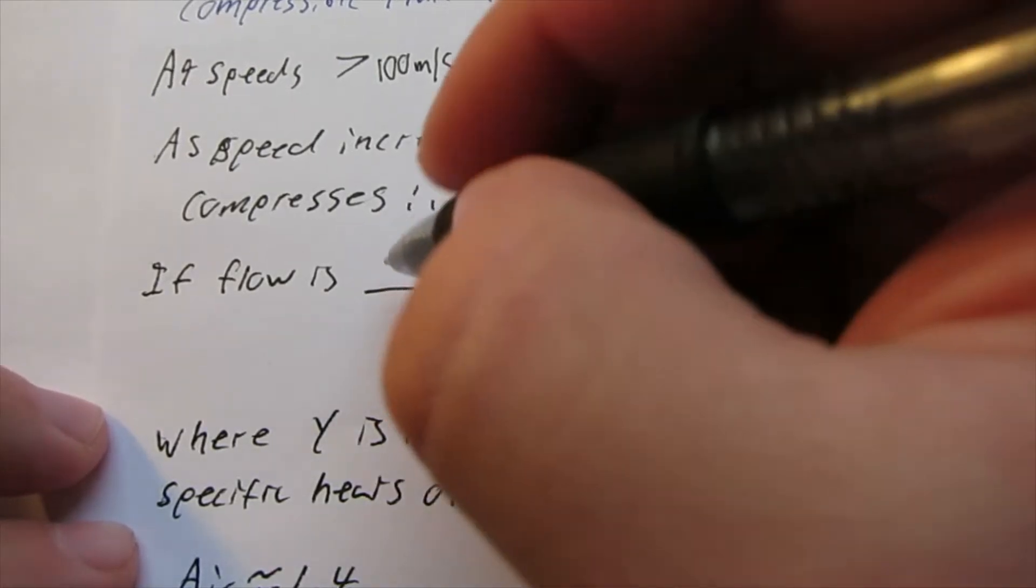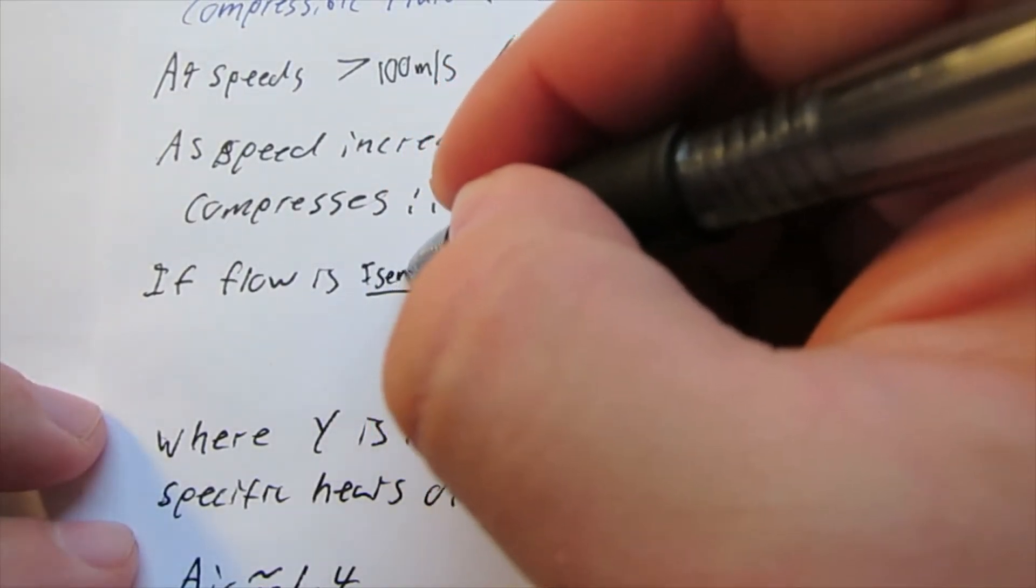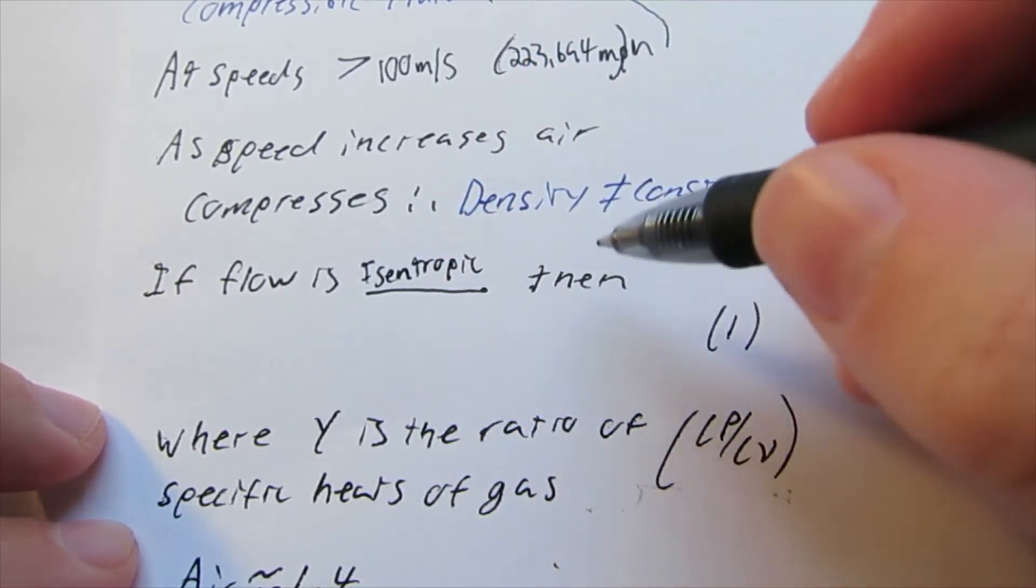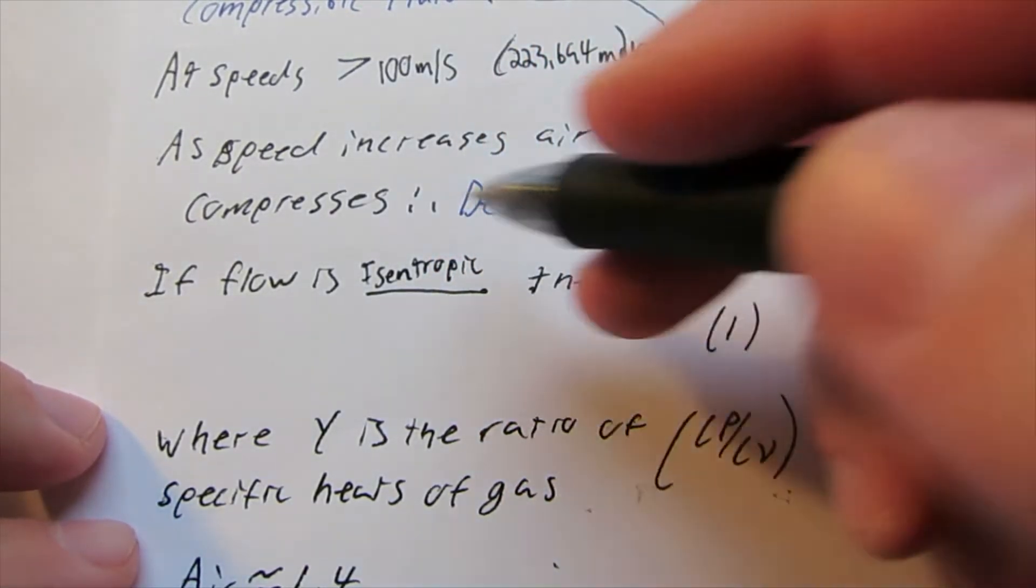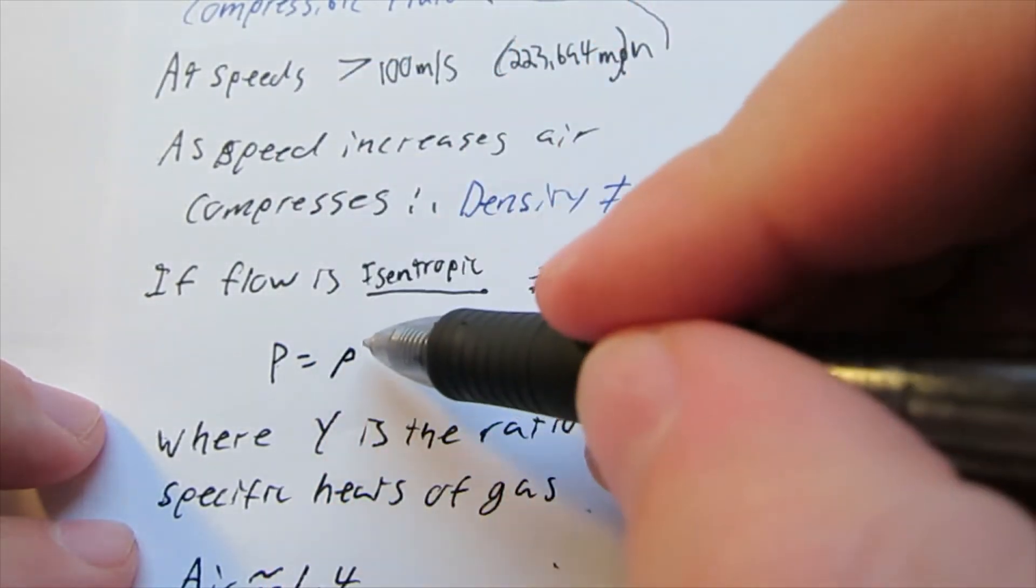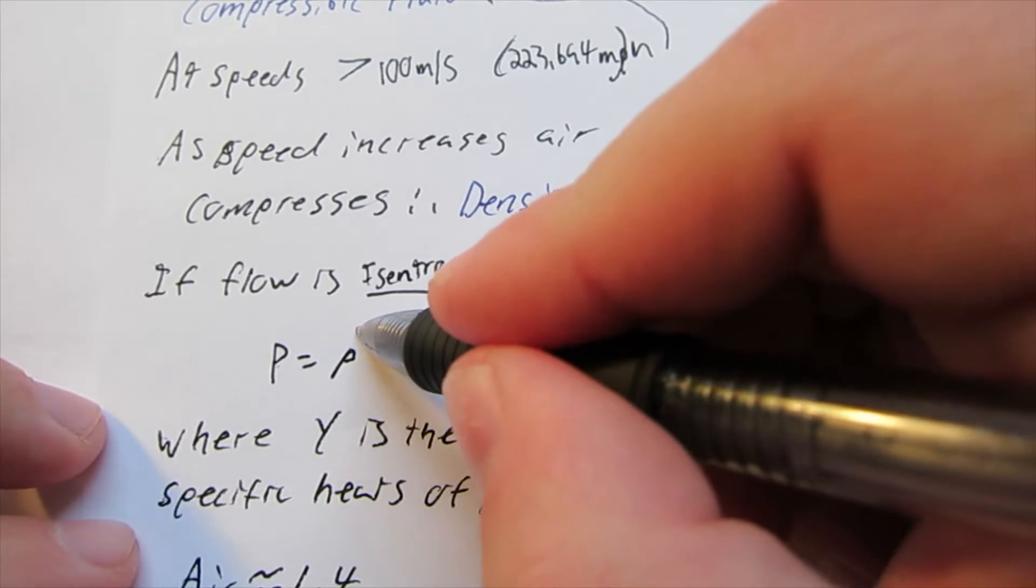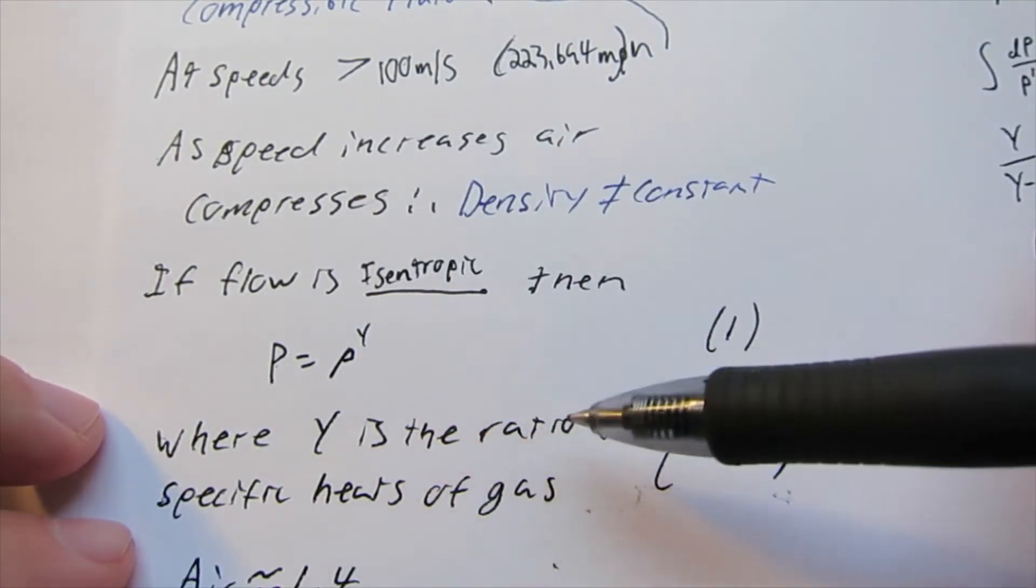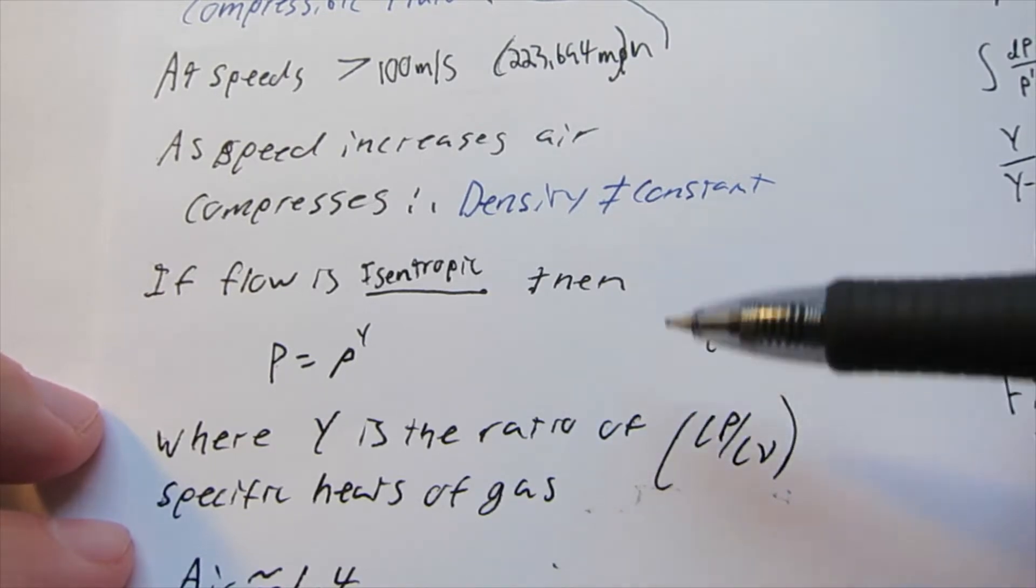So if our flow is isentropic, then we can use the relationship that the pressure equals the density to the gamma, which is a ratio, which is the ratio of specific heat of the gas, or Cp over Cv.